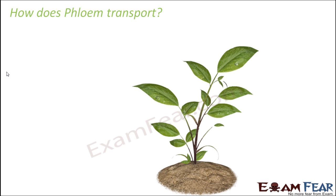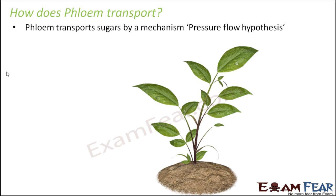In the case of xylem, the source of water was soil, so water always needed to be transported in one direction — upward. But here that is not the case. Leaves are present at all levels, so from leaves you need to transport food downwards to the roots, and also upward to upper branches, as well as laterally — in all directions.